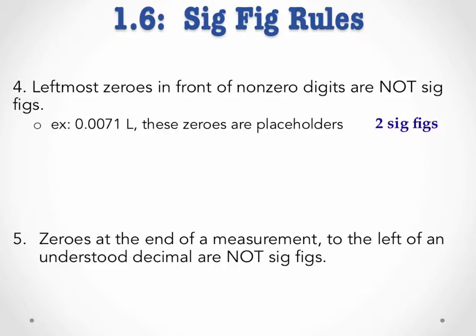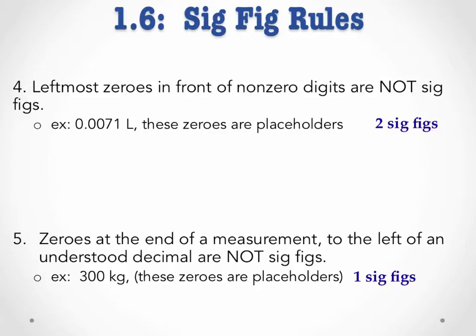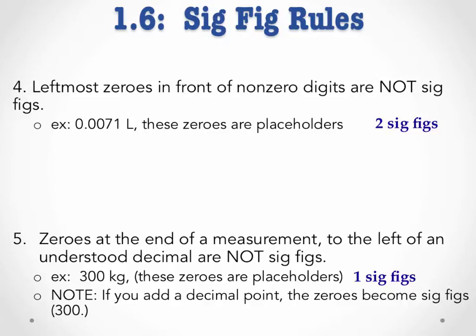Likewise, zeros at the end of a measurement to the left of an understood decimal are not sig figs. In the measurement 300 kilograms, these zeros are also placeholders — they don't tell us anything about the precision of the measurement. Therefore, this measurement contains one sig fig; only the 3 is significant. Note: if you add a decimal point to this measurement, those zeros become sig figs. By writing 300. rather than just 300, we now have three sig figs. By adding that decimal point, I'm telling the reader that I actually measured those places and they are actually zero, not just approximately zero.